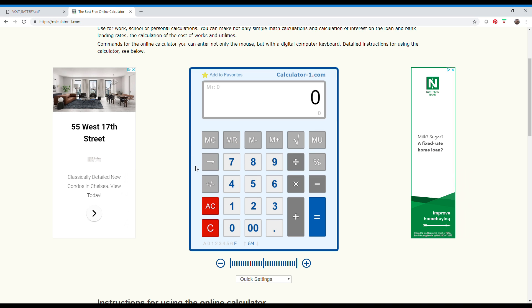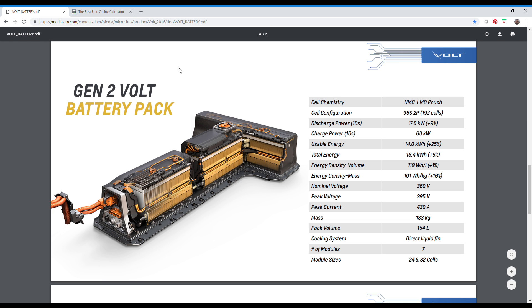So if we look at 395 volts divided by the 96, we have 4.11 volts per cell. So that's why I'm going to use 4.1 volts as my top end because I'm trying to match what General Motors did here.